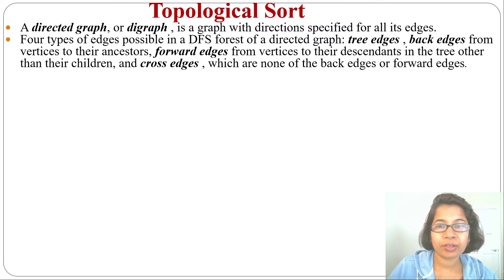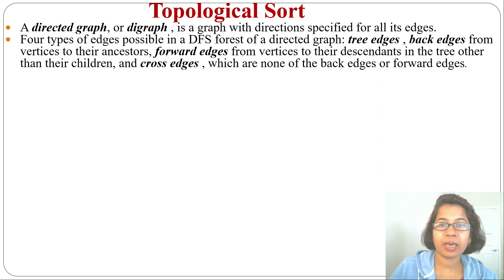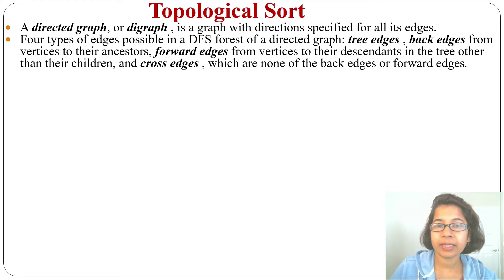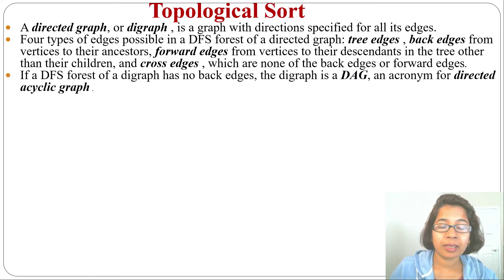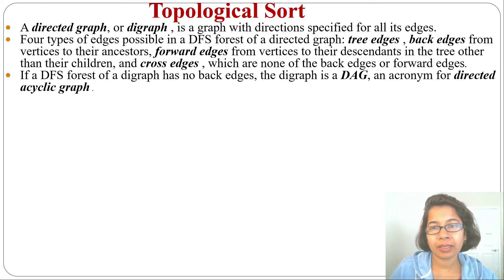I already discussed in the DFS lecture how to create a DFS forest and what are tree edges and back edges. If there is an edge from a vertex to its ancestor, that is called a back edge. If there is an edge from a vertex to its descendant, that is a forward edge. If it is neither a back edge nor a forward edge, then it is a cross edge. In a DFS forest, if any back edge is present, then the graph is not a DAG — back edge means there is a cycle. So if we are creating a DFS forest, there should not be any back edge. A directed graph without any cycle is called a DAG.